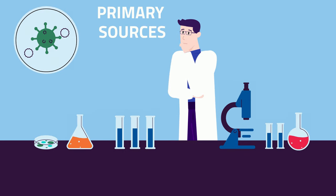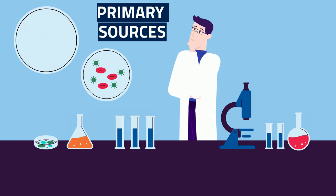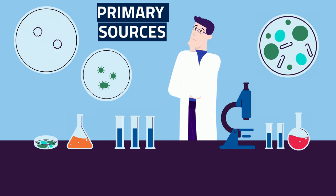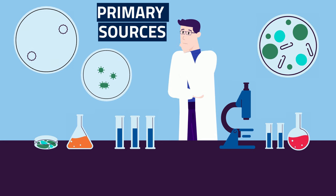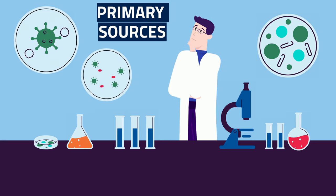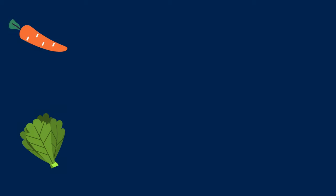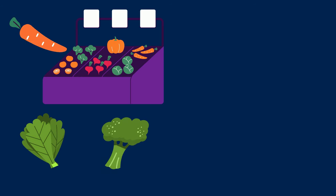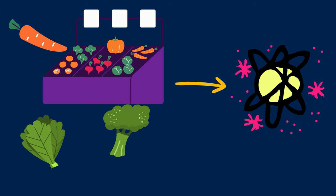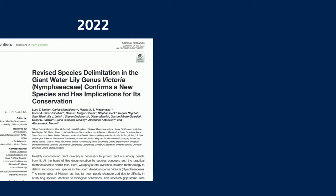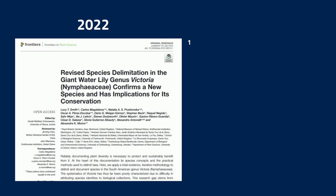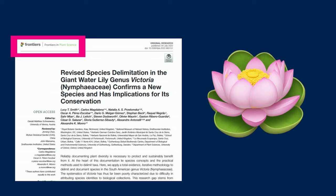First up, primary sources. These are the original research papers where scientists report their findings for the first time. Think of them as the fresh produce of the scientific world. For example, in 2022, researchers published a paper in the journal Frontiers in Plant Science about discovering a new species of water lily.